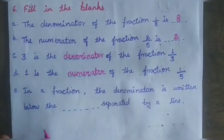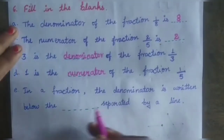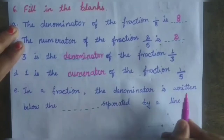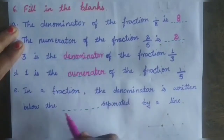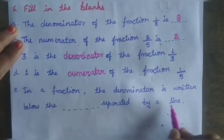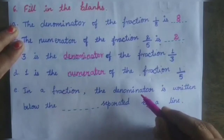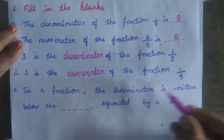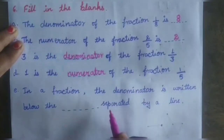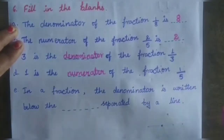Fifth question: In a fraction, the denominator is written below the dash, separated by a line. So in a fraction like 1 by 5, the denominator is the number written below the line.